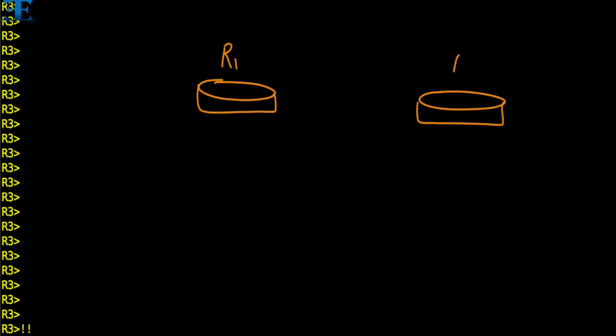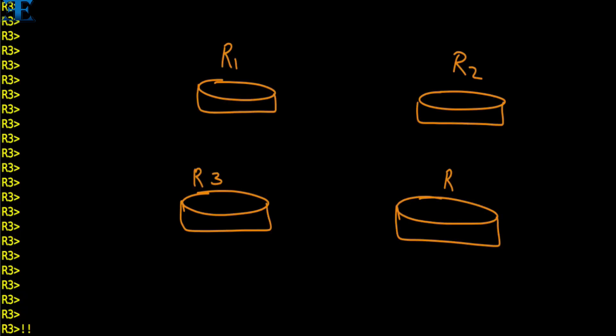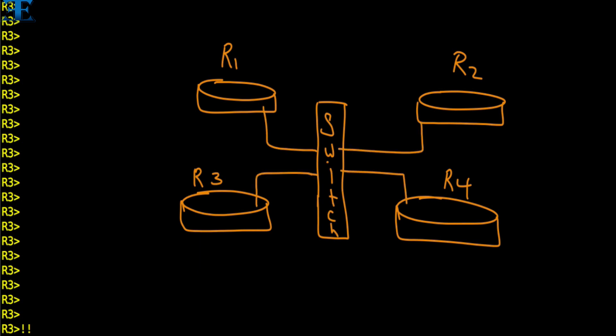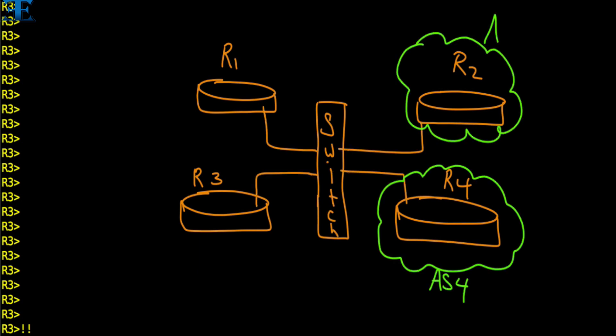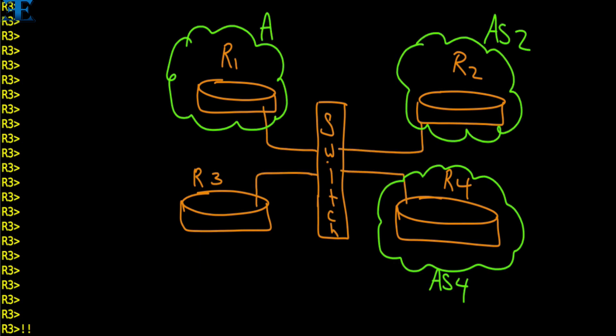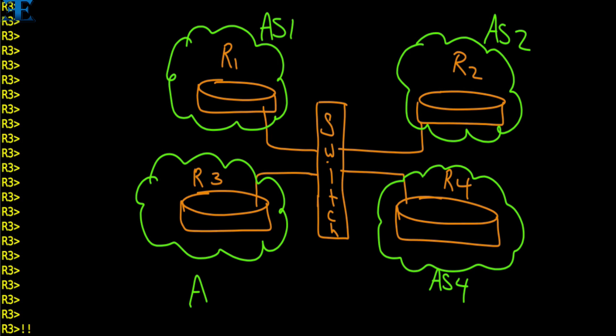In this topology, we simply connect four routers to a switch and we will make a full mesh BGP neighborship between the routers. Now let's do the configuration and make them neighbors.